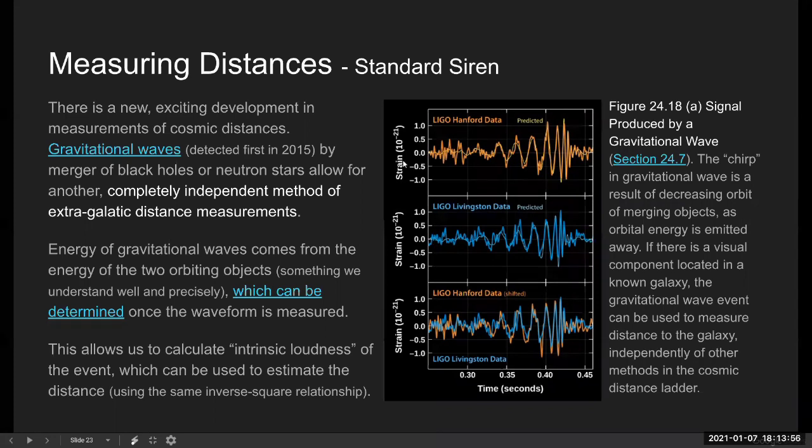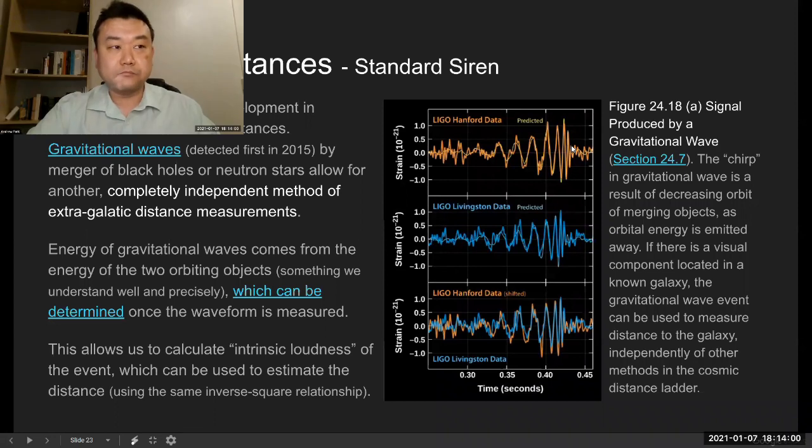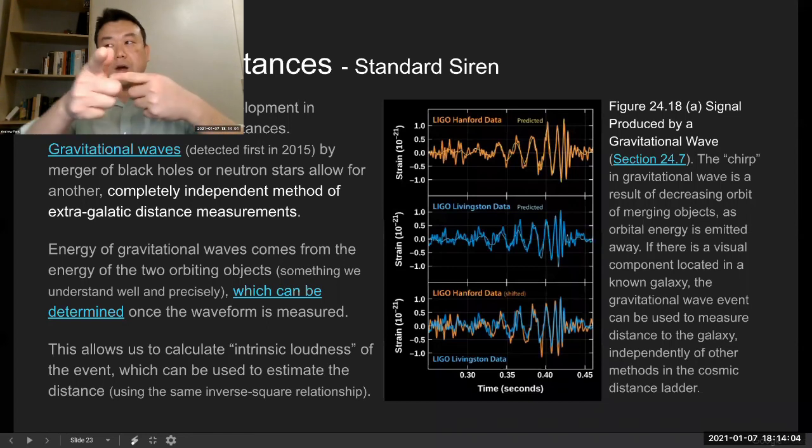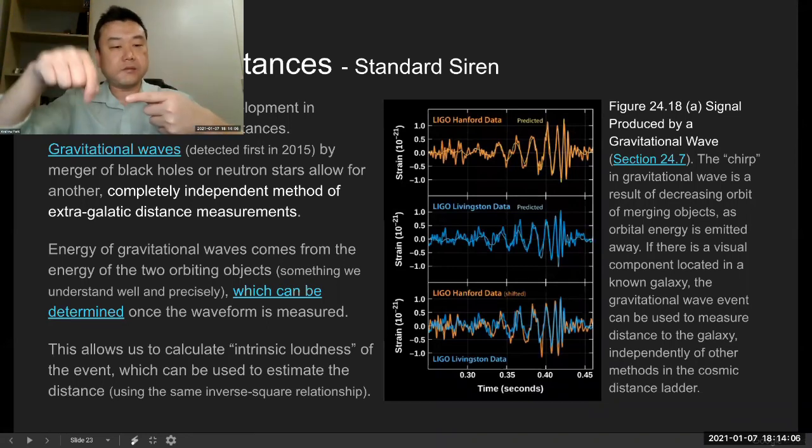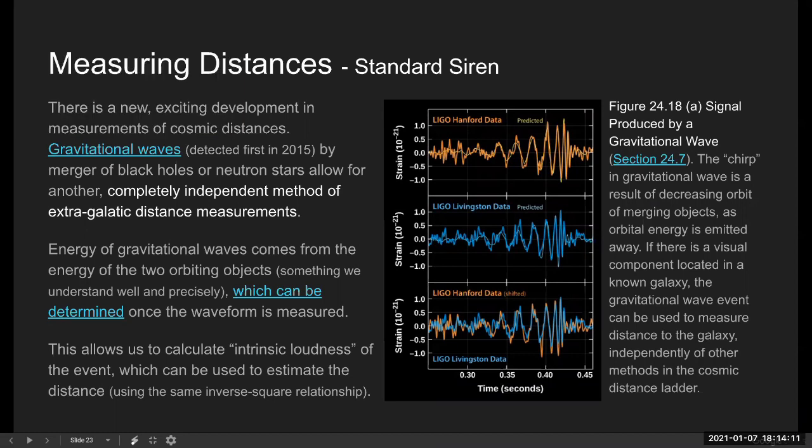This is the signal that they are measuring, ripples in space-time, difference in the length of the two arms of the detector, the gravitational wave detector. And I guess what I wanted to point out was just how short this time scale is. So they detect the gravitational wave as...